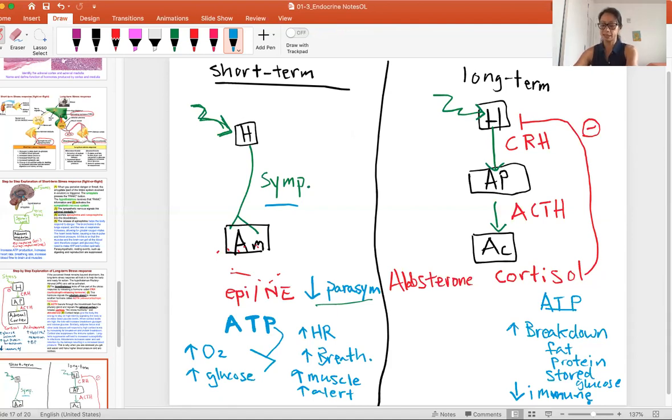Or with prolonged stress, things start coming out through immune suppression. Aldosterone has a role of increasing water and salt retention in the body, and together it's going to increase blood pressure. This is why people who are stressed all the time can have higher blood pressure.